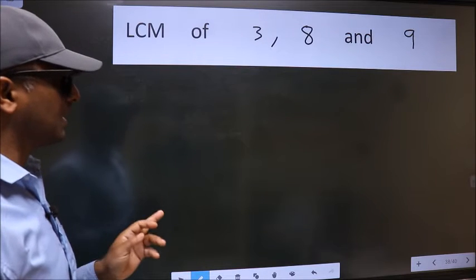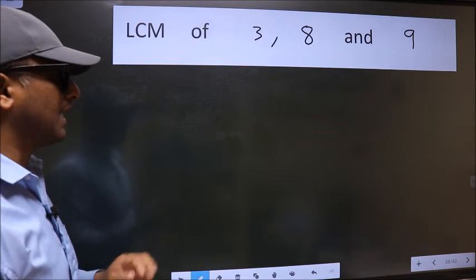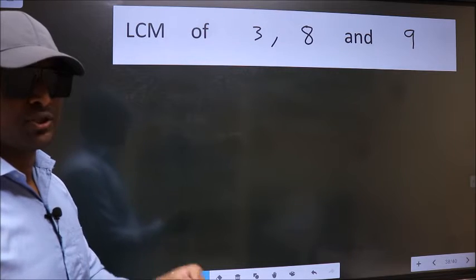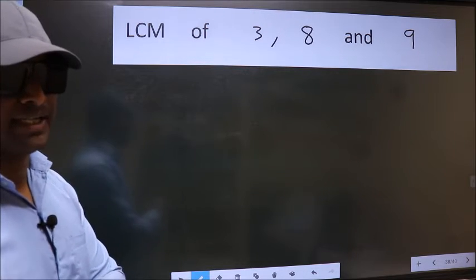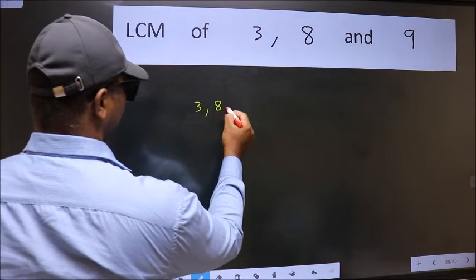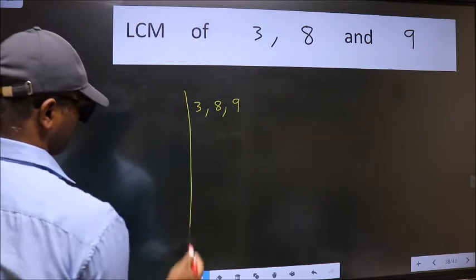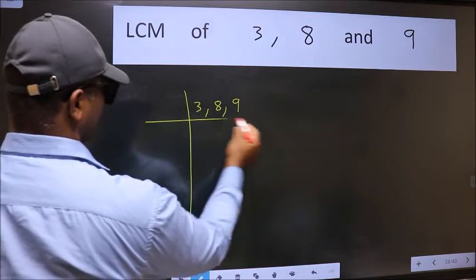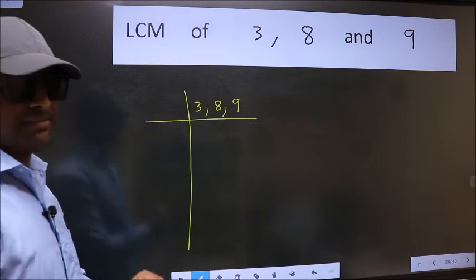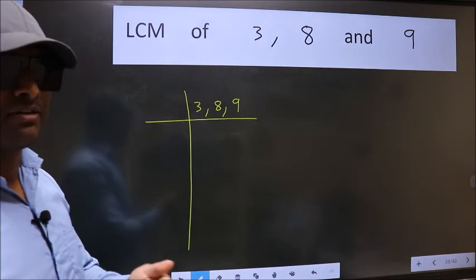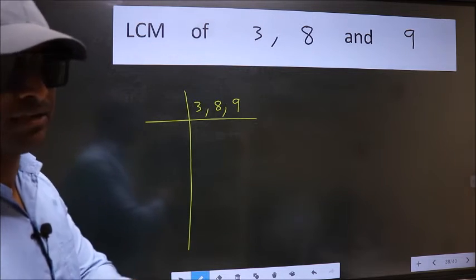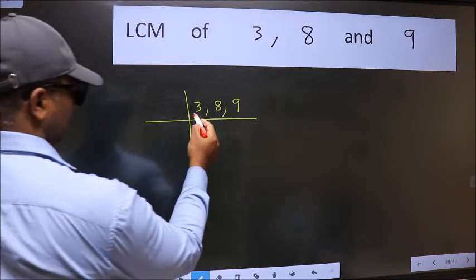LCM of 3, 8 and 9. To find this LCM, we should frame it in this way: 3, 8, 9. This is your step 1. Now we should focus on the first number, which is 3 here.